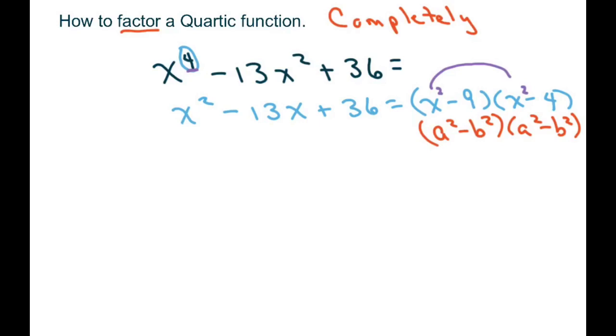So what you need to know is a squared minus b squared equals a minus b times a plus b. And you do this with this because 9 and 4 and x squared are all perfect squares.